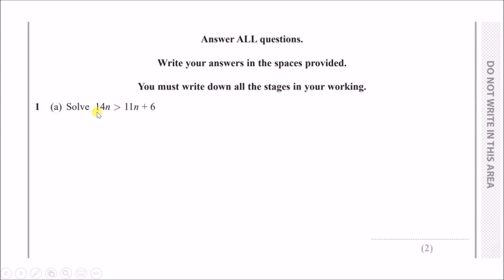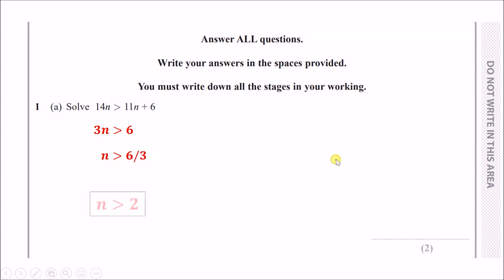We've got 14n and 11n. To move 11n across, we subtract 11n. So 14n minus 11n is 3n, and we keep 6 on the right. Then just make n the subject by dividing by 3. You're left with n greater than 6 over 3, which is n greater than 2. Done.